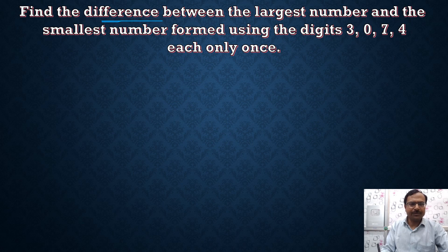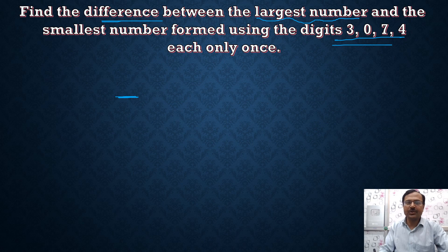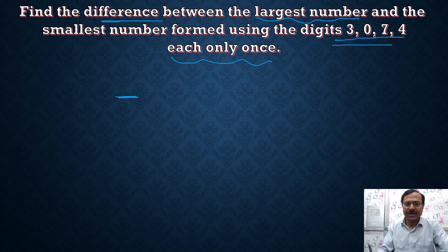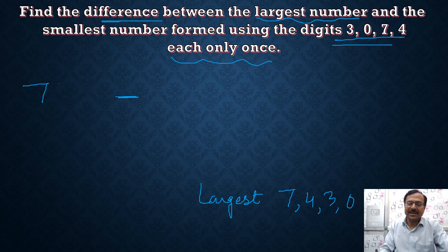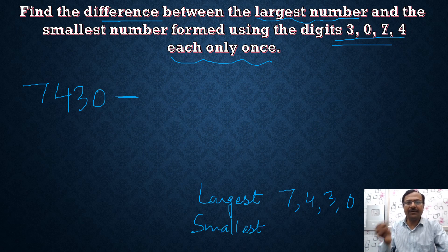The first question asks us to find the difference between the largest and smallest numbers formed by given digits — using each digit only once. So we have four digits: 7, 4, 3, and 0. To find the largest number, we arrange them in descending order — highest first — giving us 7430. To find the smallest number, we arrange them in ascending order: 0, 3, 4, 7. However, since the leading zero is insignificant, the smallest number is actually 347.